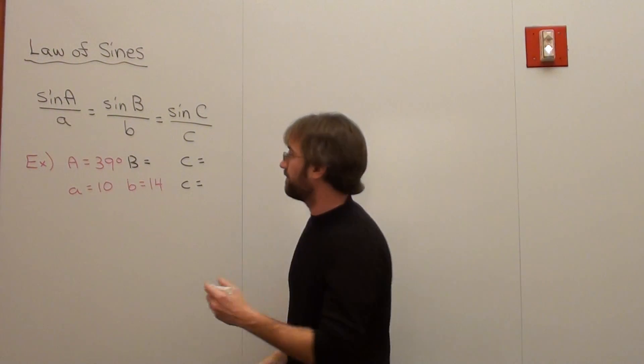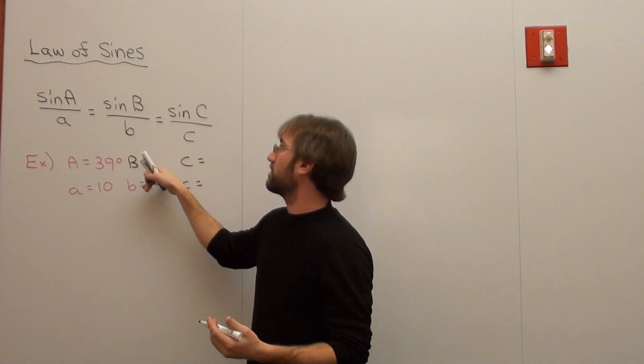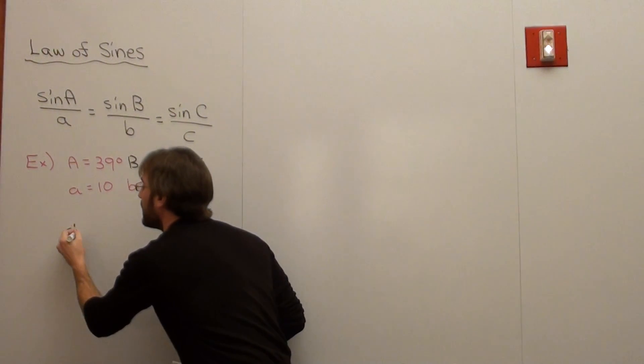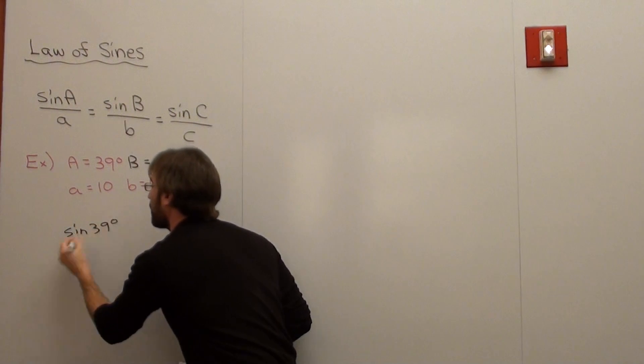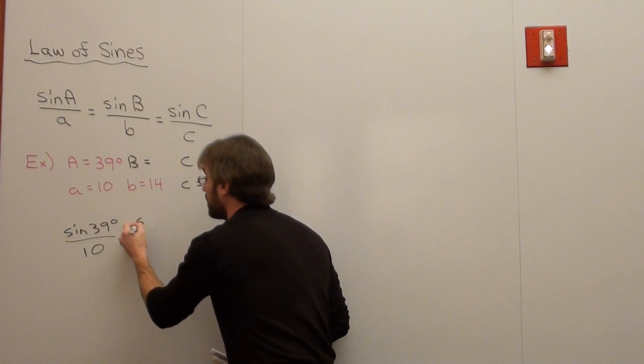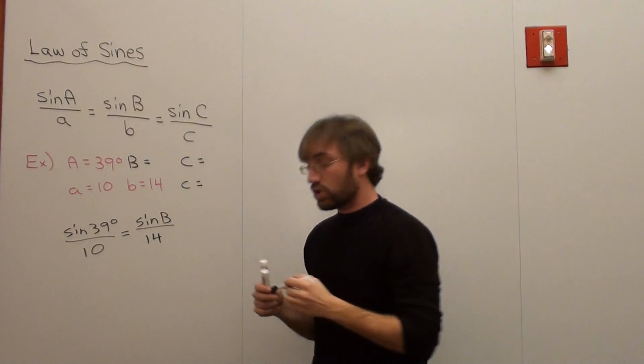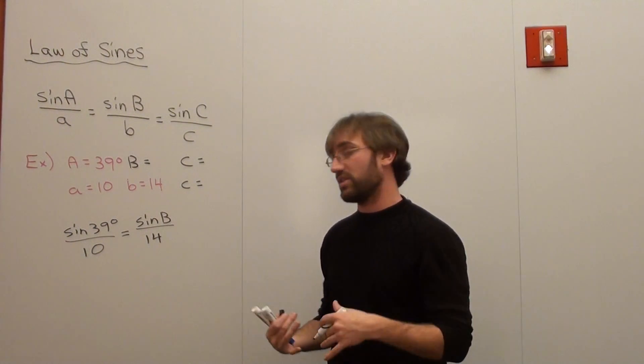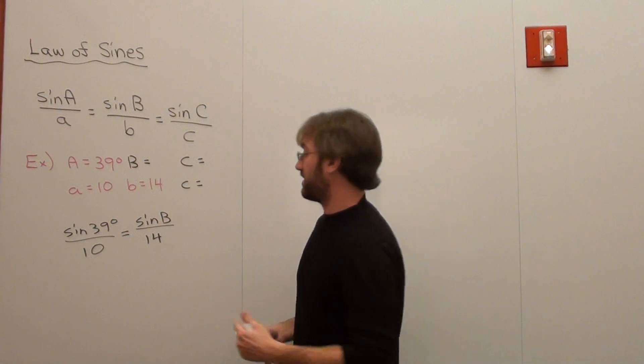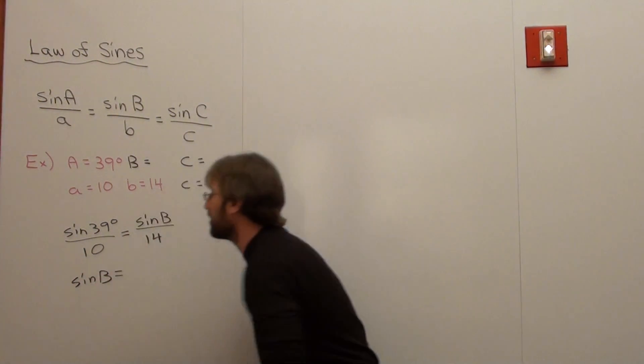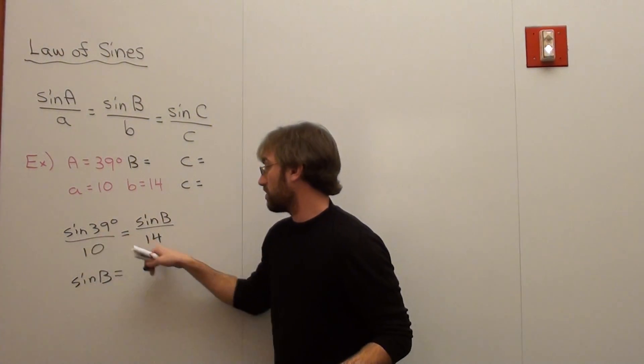We're going to try with sine of A over A because we're going to try to solve for B first. We can't solve anything for C. There's no chance. So sine of 39 degrees over 10 equals sine of B, which I don't actually know, over 14. So what I'm going to do is solve for sine of B. I'm a little lazy here and I'm not going to show this step. I've already done that on the previous lesson. We're going to cross multiply these.